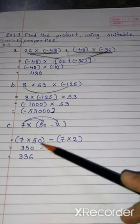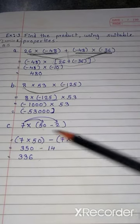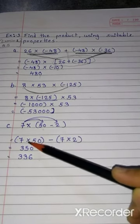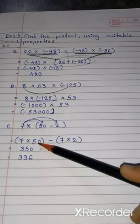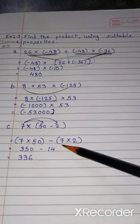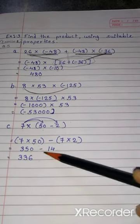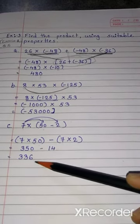7 into 50 minus 7 into 2. Multiply these two numbers and these two numbers. 7 into 50 equals to 350. 350 minus 7 into 2 is 14. 350 minus 14 is 336.